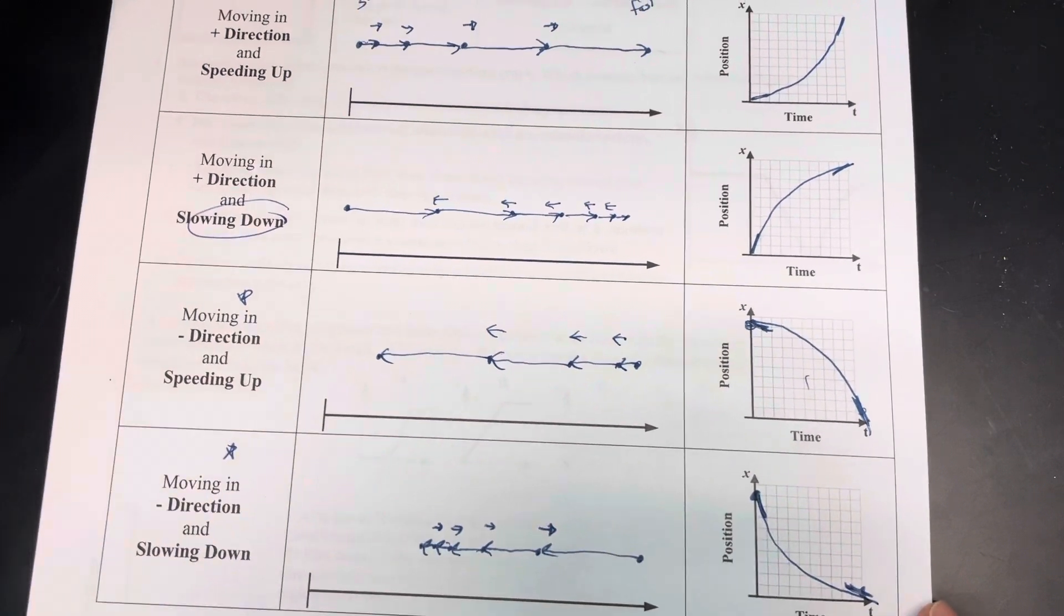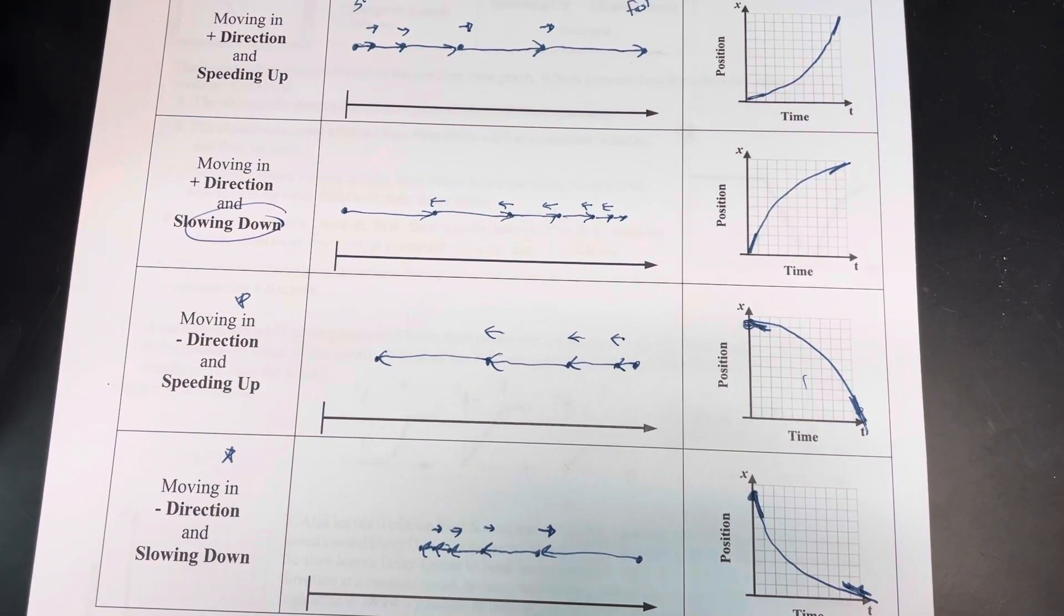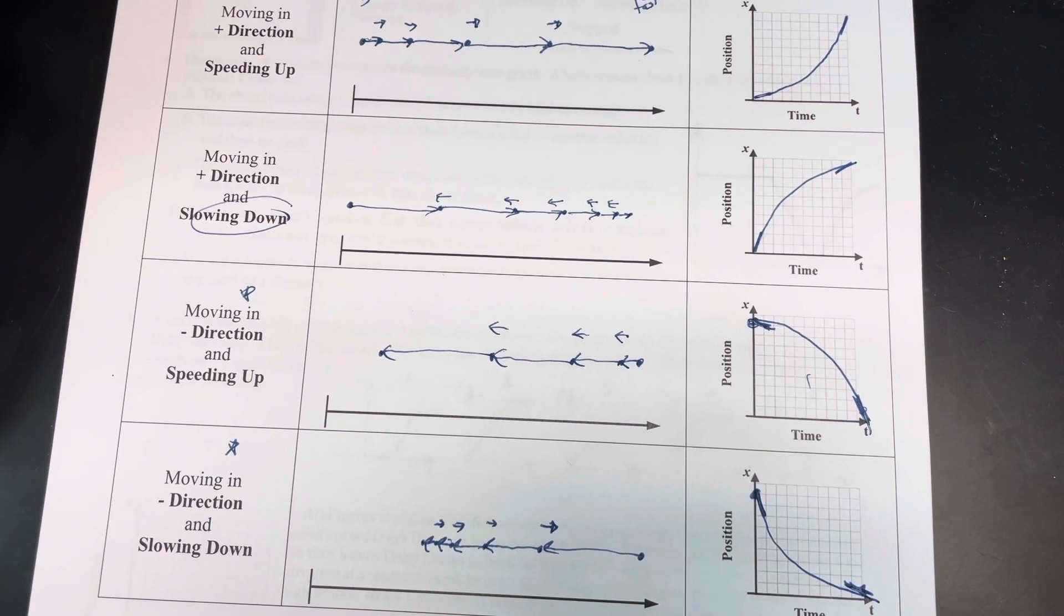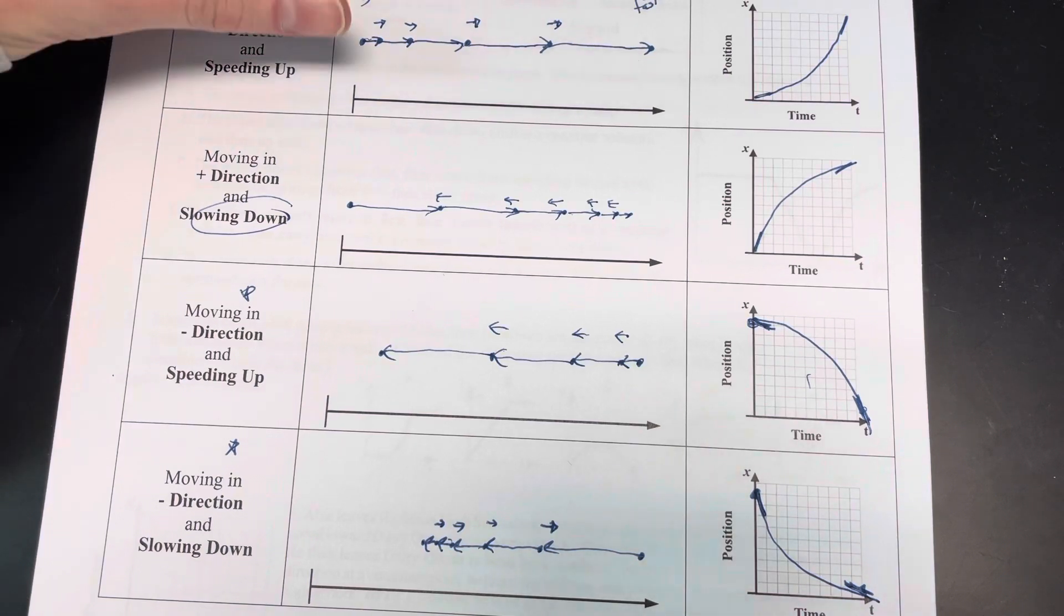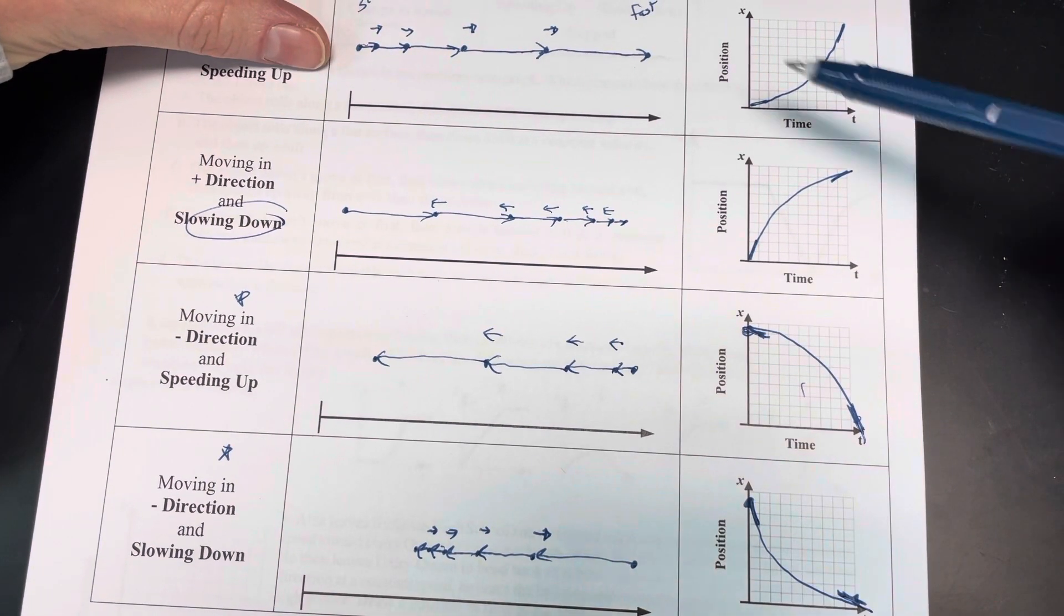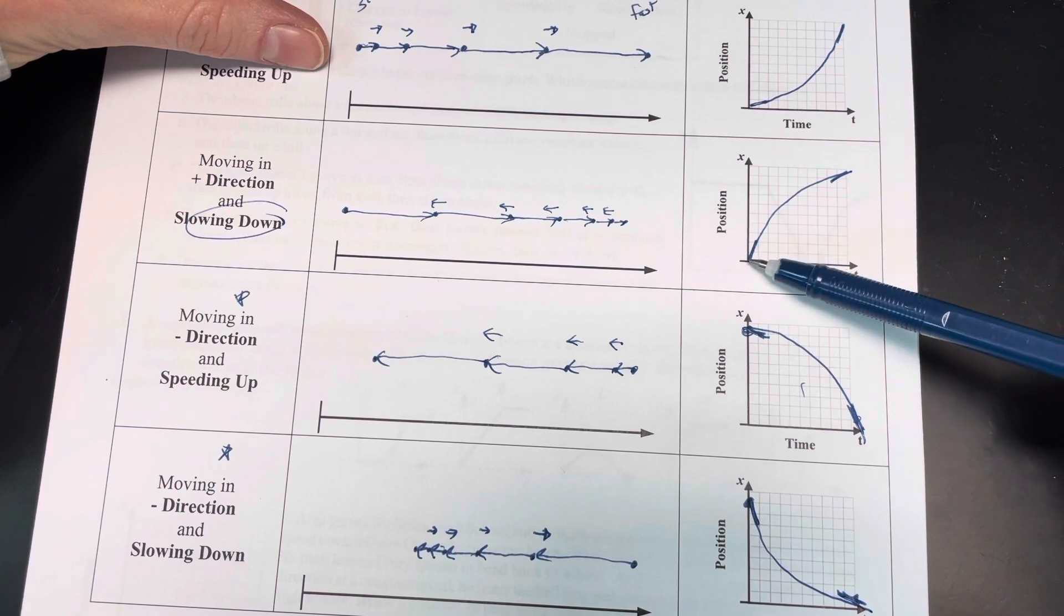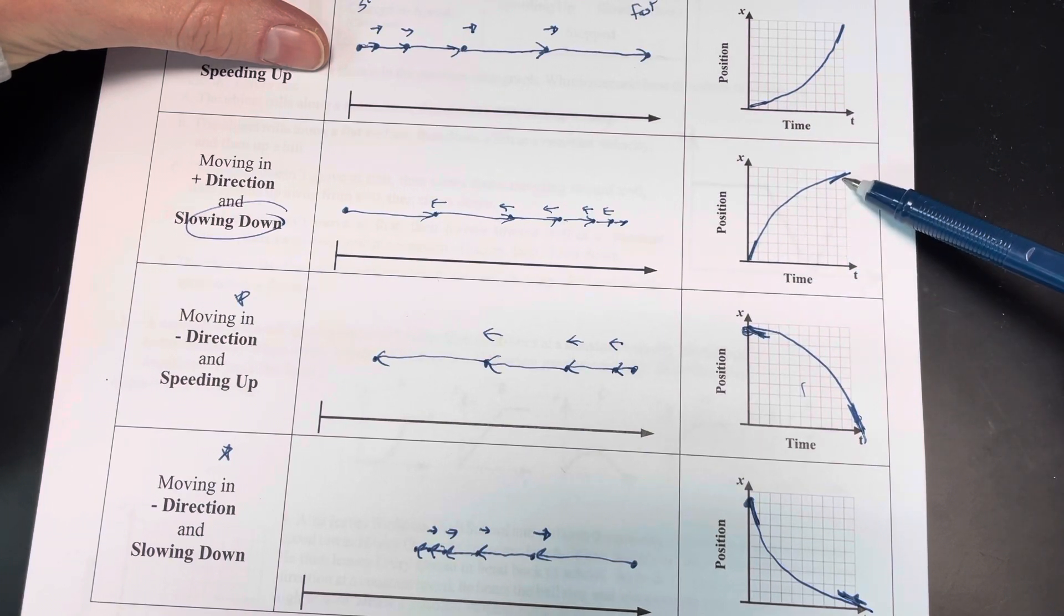Those are our four possibilities right there. I don't know if I can zoom out because I've got my camera pretty close. But this is what my options are. Here I'm going in the positive direction, speeding up. Here I'm going in the positive direction, slowing down.